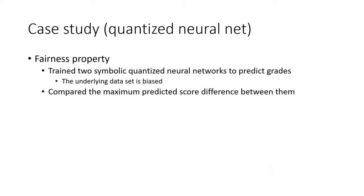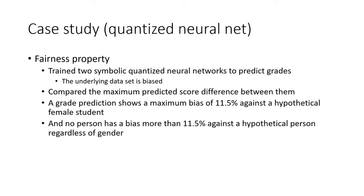We also explored inherent bias in trained quantized neural networks. In this example, a quantized neural network is trained to predict grades. The input variables include personal details including gender. We explored the effect of the bias of the underlying data set against female students. We trained two symbolic networks to compare the maximum difference between their predictions. We found that the maximum bias is 11.5% against female students, but there is no other person who would have a bias of more than 11.5% regardless of gender. This allows us to quantify the amount of bias that may be learned by a neural network.